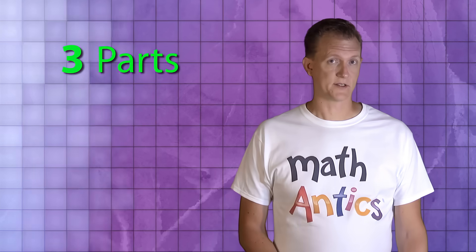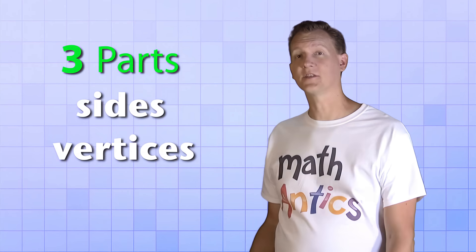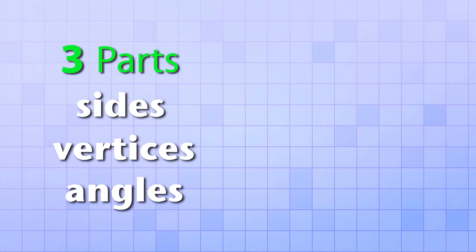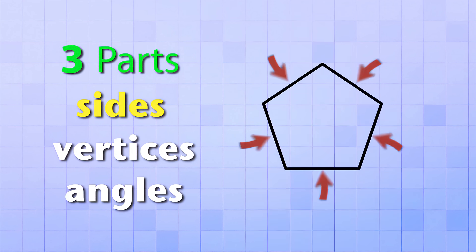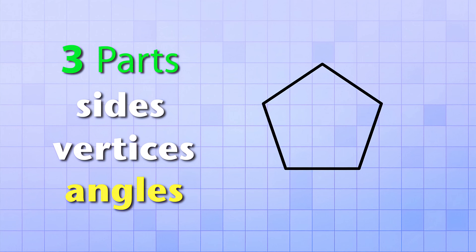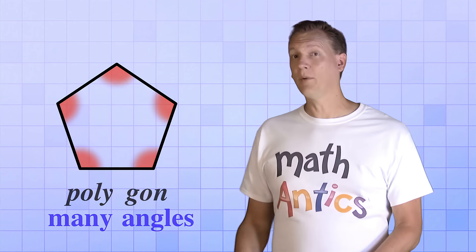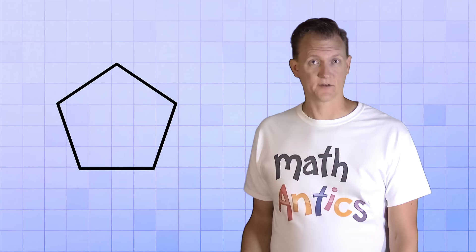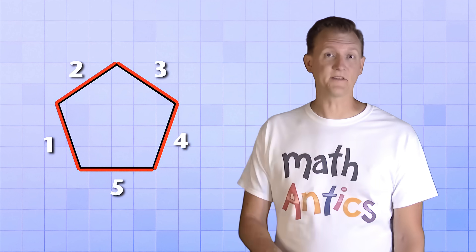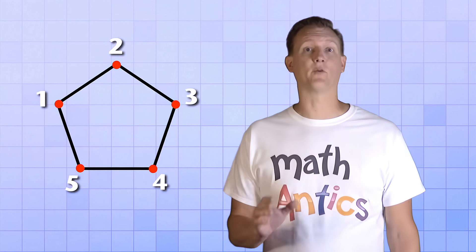First, we need to know the three parts that make up all polygons. And these parts are sides, vertices, and angles. The sides are just the straight line segments that make up a polygon. And the vertices are the points where the sides intersect. And the angles are formed by the intersecting lines. In fact, in Greek, the word polygon literally means many angles. So all polygons have sides, vertices, and angles. This polygon here has five sides, five vertices, and it forms five angles.